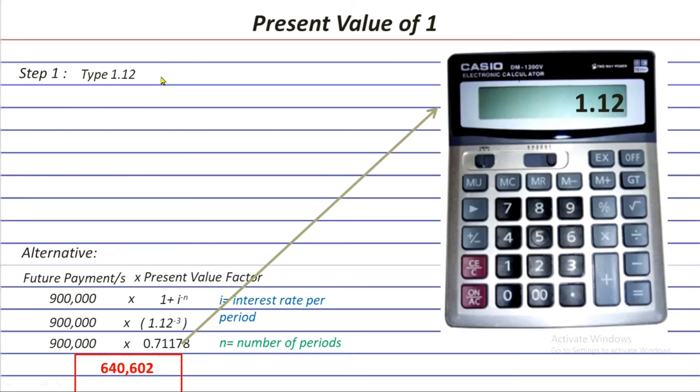Step 1. Type in 1.12. This is done to enter the 1 plus interest rate in the calculator.